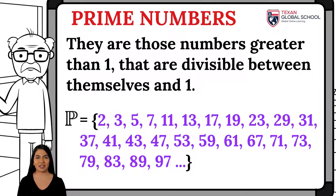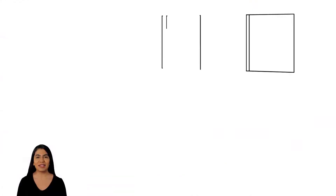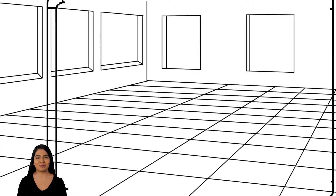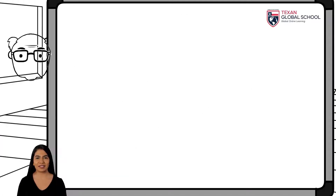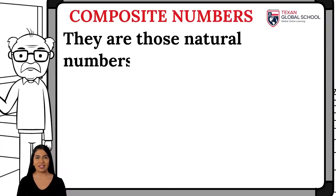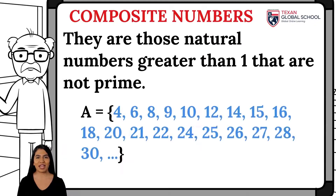In the set P, the prime numbers less than 100 are shown, some of which are 2, 3, 5, 7, 11, etc. On the other hand, composite numbers are those natural numbers greater than one that are not prime.